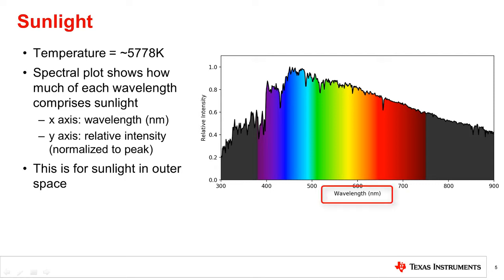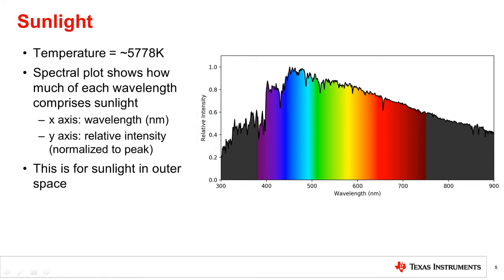Spectral plots have wavelength as the x-axis and show for each wavelength how much power is radiated. In this case, the y-axis is normalized, so power is shown relative to the peak. It can be seen that sunlight is comprised of a number of wavelengths of visible white,